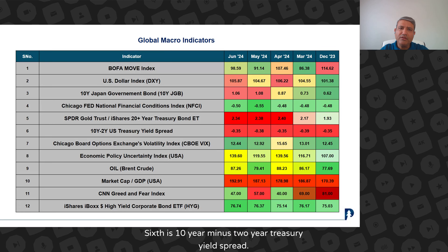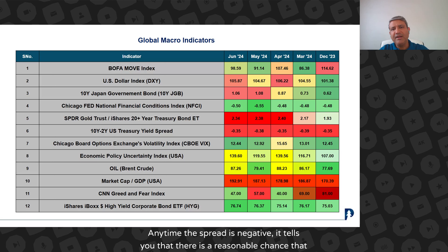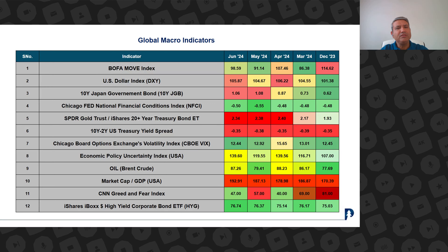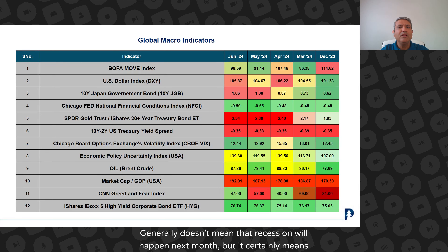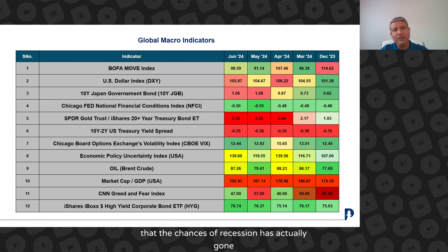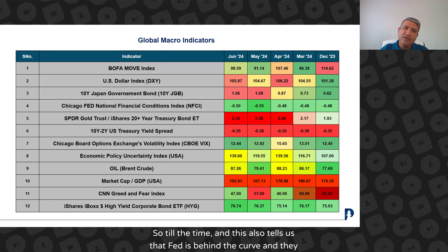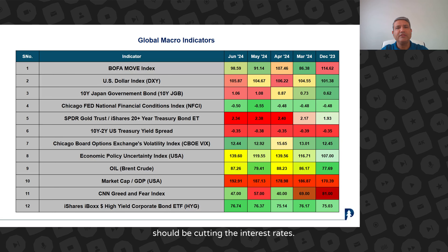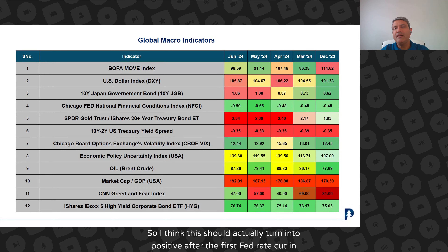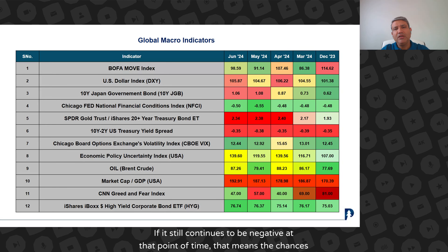The sixth is the 10-year minus 2-year Treasury yield spread. Anytime this spread is negative, it tells you that there is a reasonable chance that you are going to get into recession. It generally doesn't mean that recession will happen next month, but it certainly means that the chances of recession have actually gone up. This also tells us that the Fed is behind the curve and they should be cutting interest rates. I think this should actually turn positive after the first Fed rate cut in September. If it still continues to be negative at that point, that means the chances of recession risk have gone up significantly.